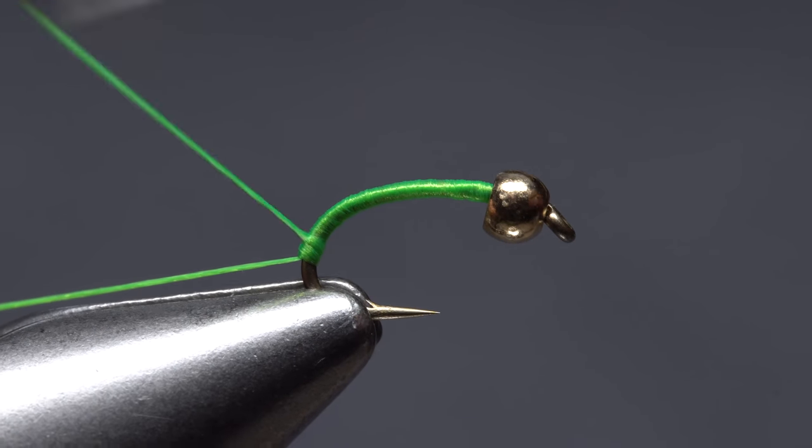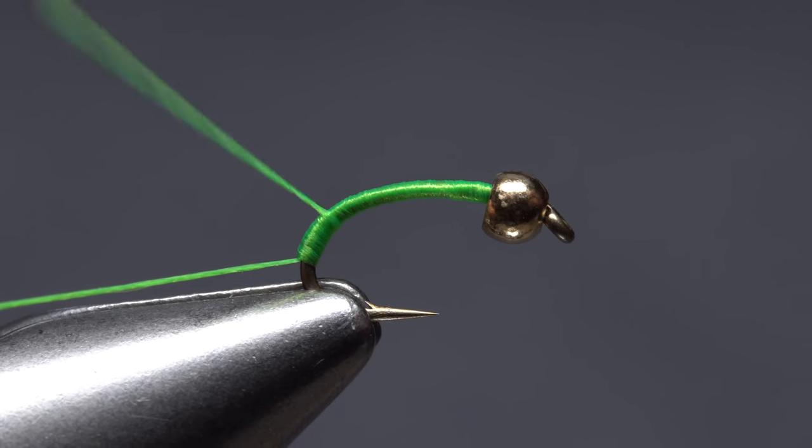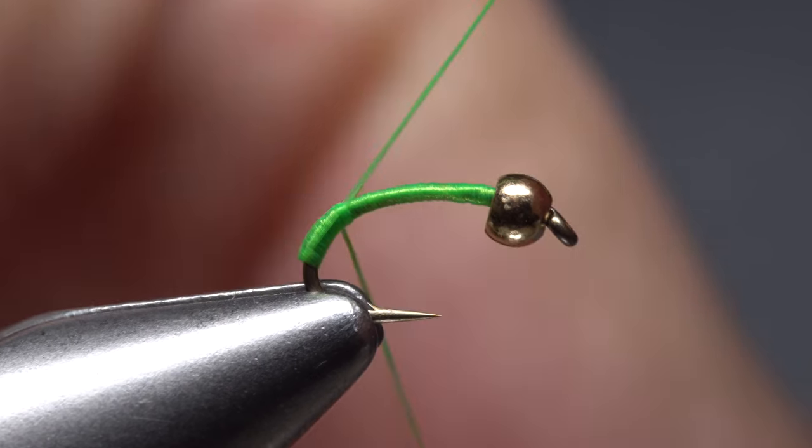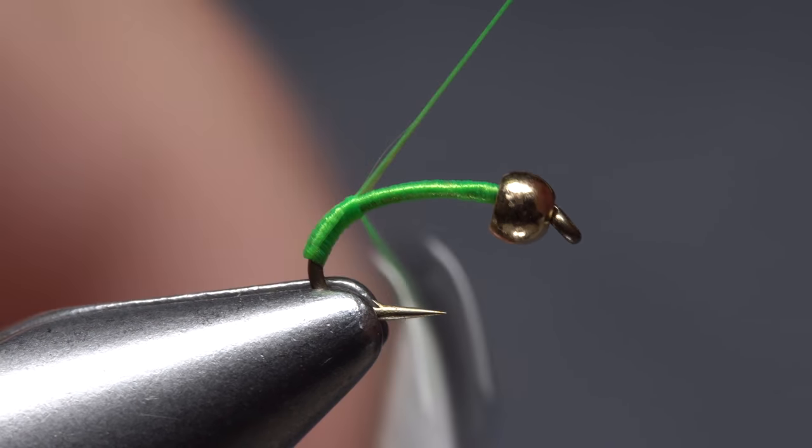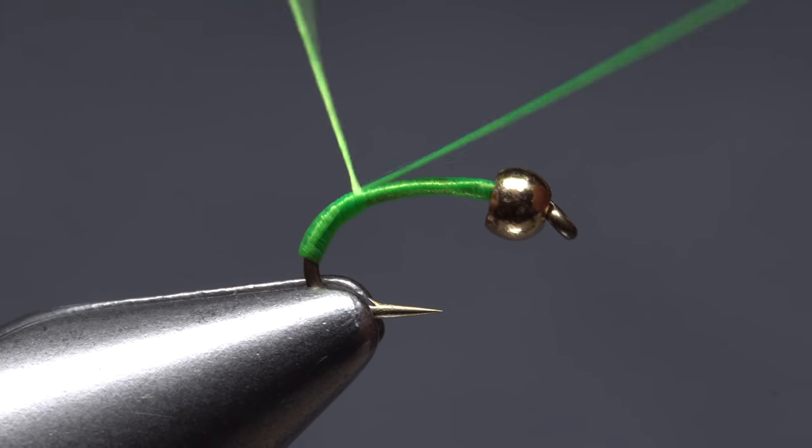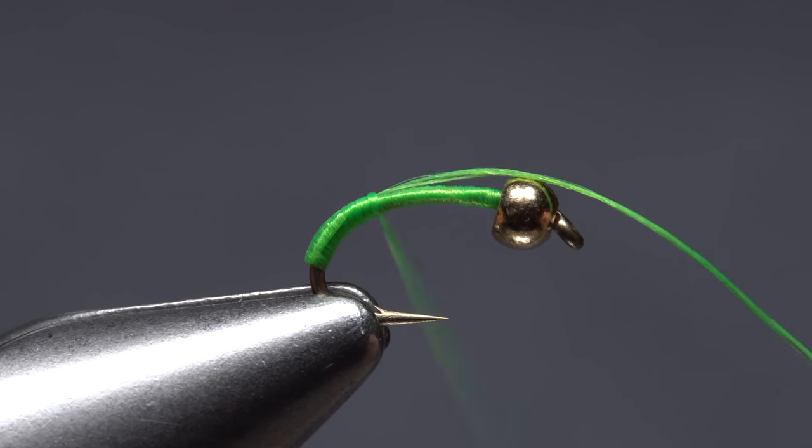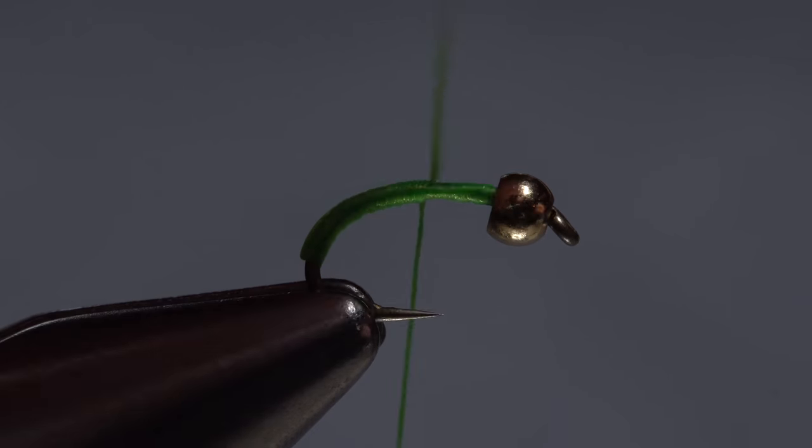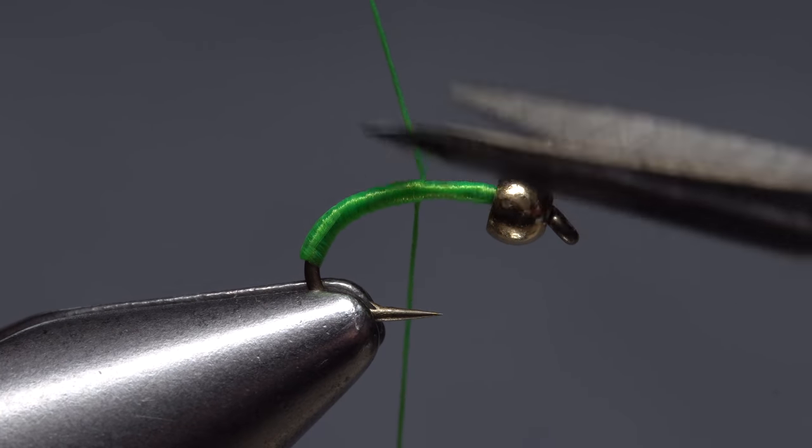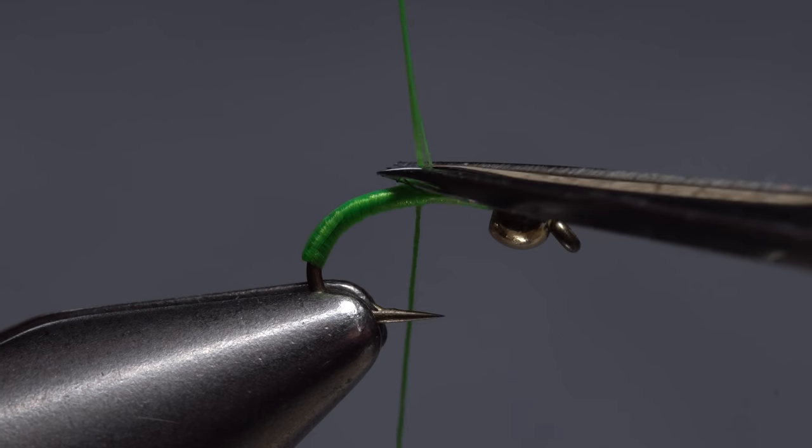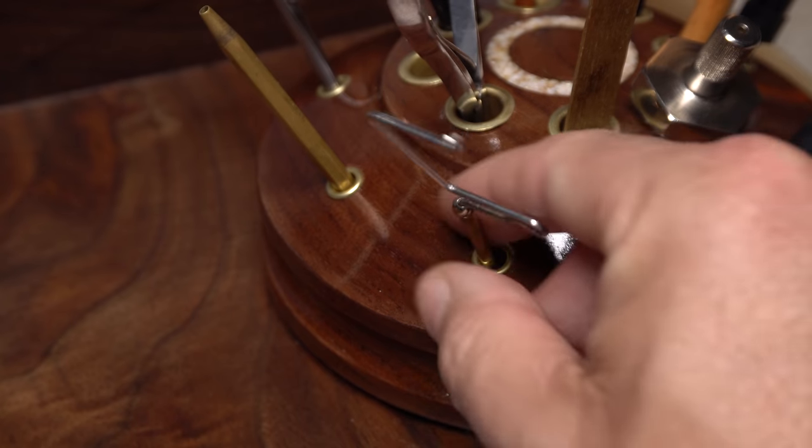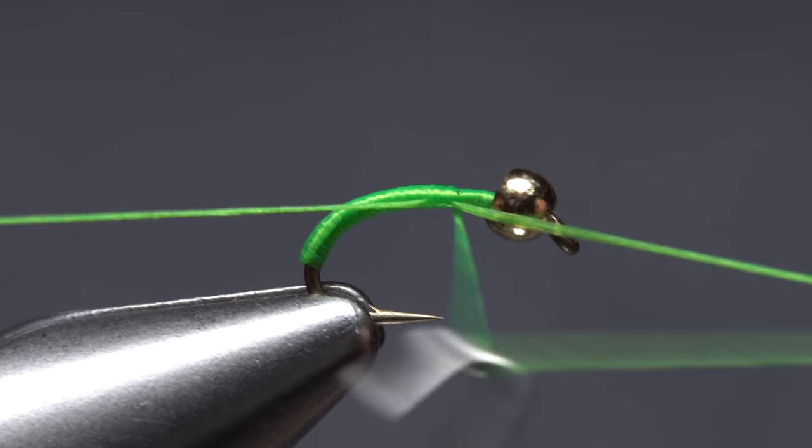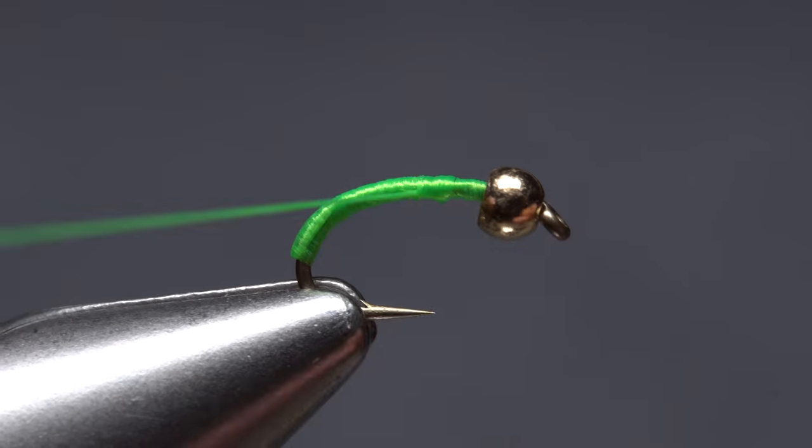Then take a half dozen or so touching wraps back up. Pull the tag end up and forward so it rests on top of the hook shank and take wraps to secure it there. This will keep the thread wraps below from slipping further down the hook shank. Continue taking touching wraps to reach the midpoint of the shank, then lift the remaining tag up and snip it off close. Reach for your whip finish tool and use it to do a 4 or 5 turn whip finish, seat the knot well, and snip or cut your tying thread free.